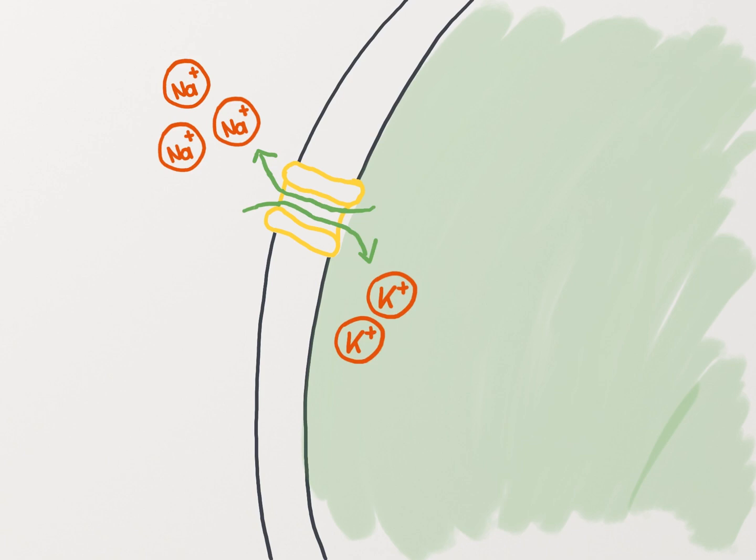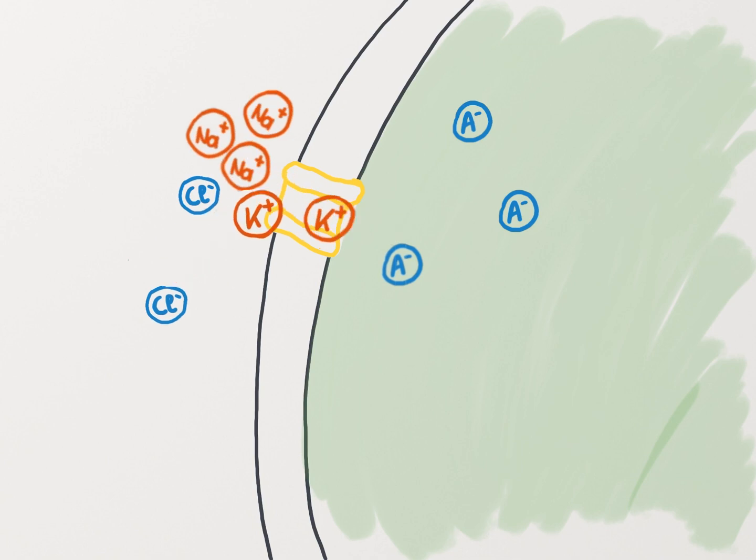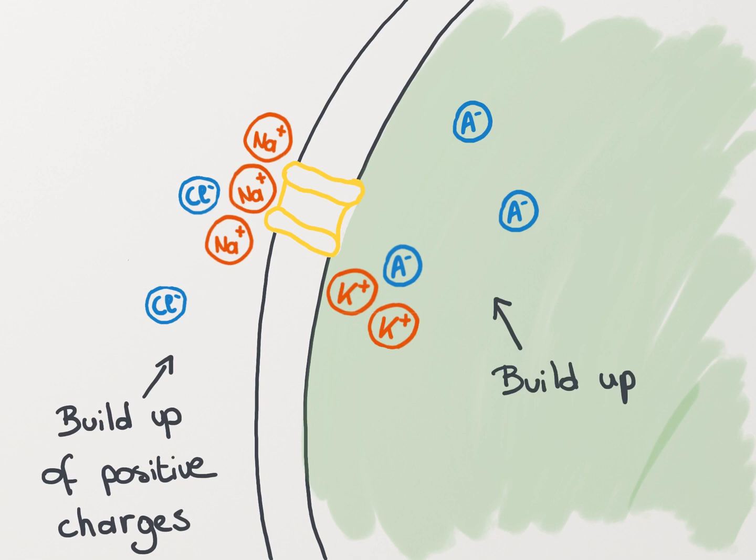The result of this pump action is actually twofold. First, as the pump brings more positive ions out of the cell compared to inside the cell, it contributes directly to the negative membrane potential, because of the buildup of positive charges on the outside of the cell and negative charges on the inside.